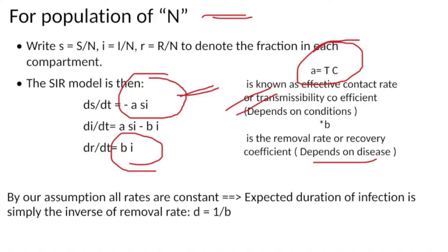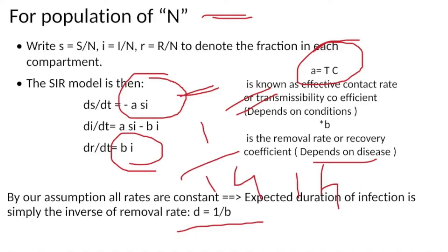By our assumptions, all rates are constant — population is constant, transmissibility is constant, and the population is well-mixed. The duration of infectiousness is simply the inverse of constant B. For example, in measles, the duration of infectiousness is 14 days, so D equals 1 divided by 14, meaning every case recovers within 14 days.